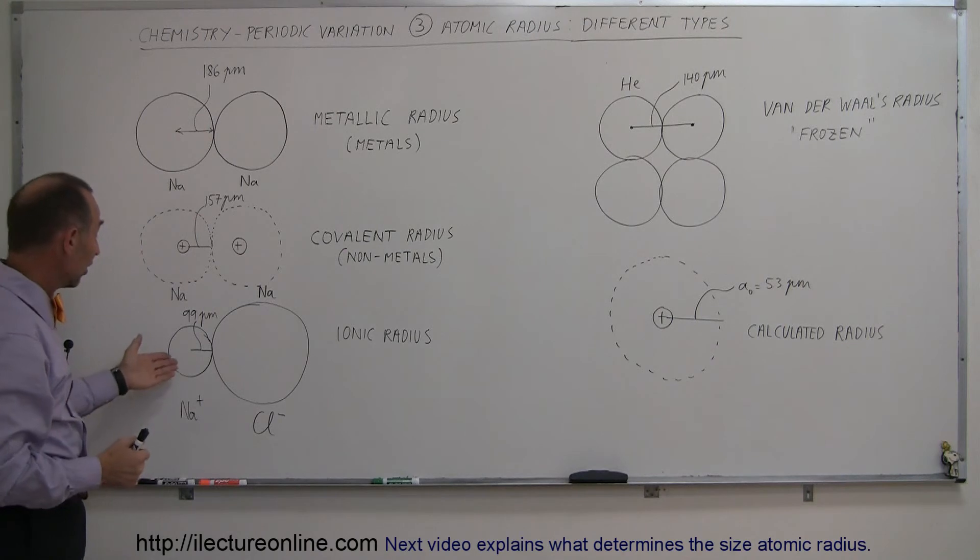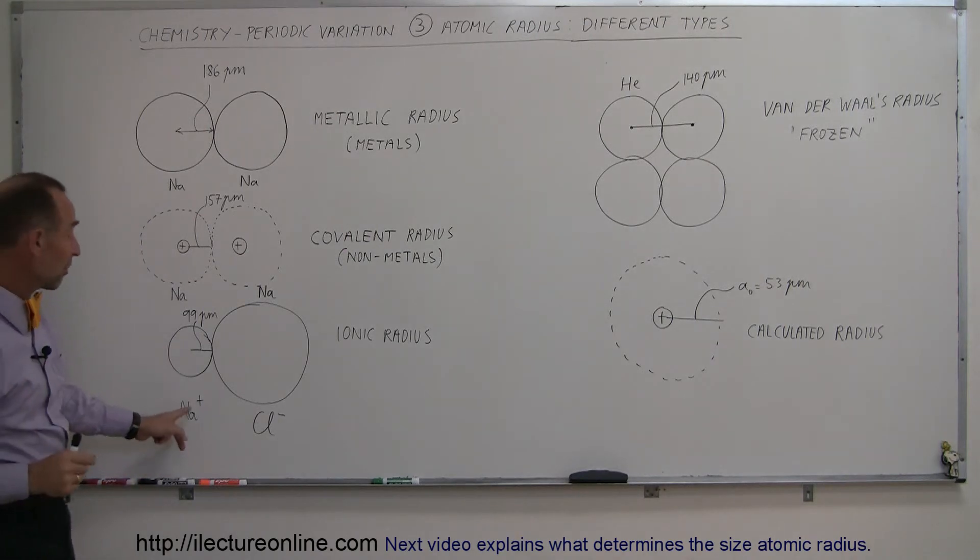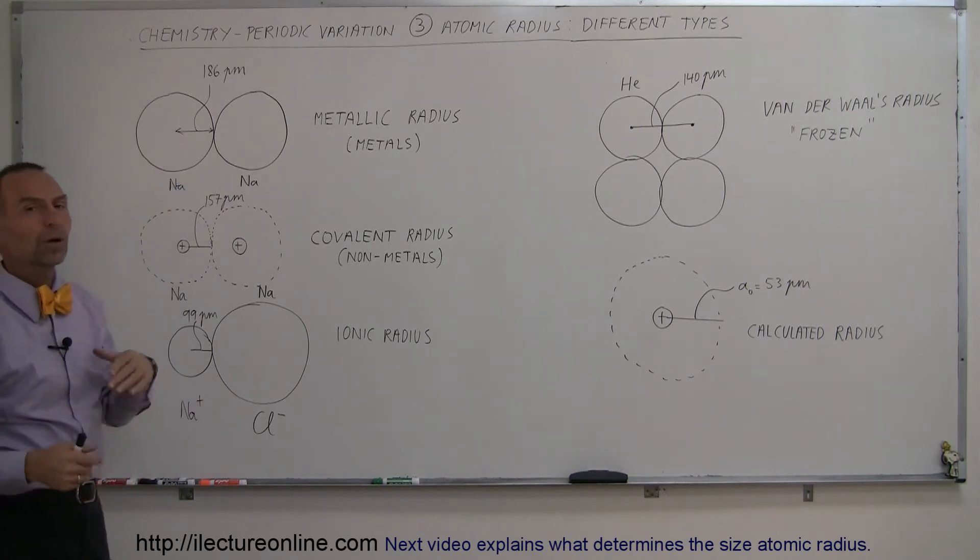As compared to 157 picometers for the covalent radius and 186 picometers for the metallic radius. So in essence, the radius of a sodium ion with just one electron removed is almost half the size of what it would be in a metallic radius environment.